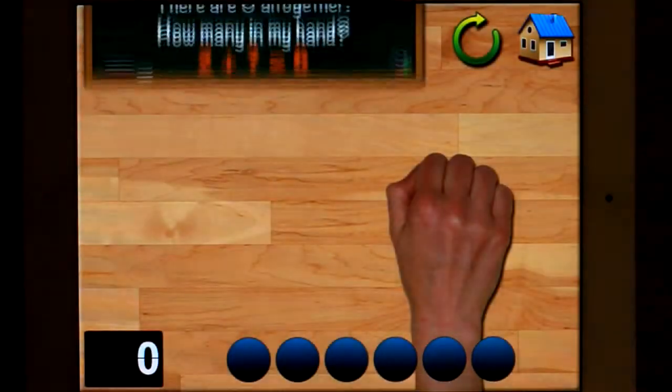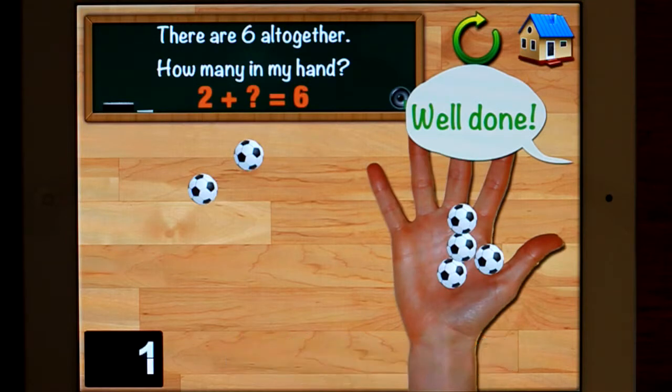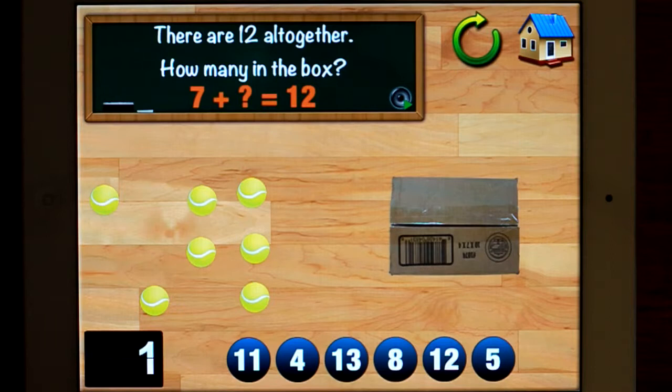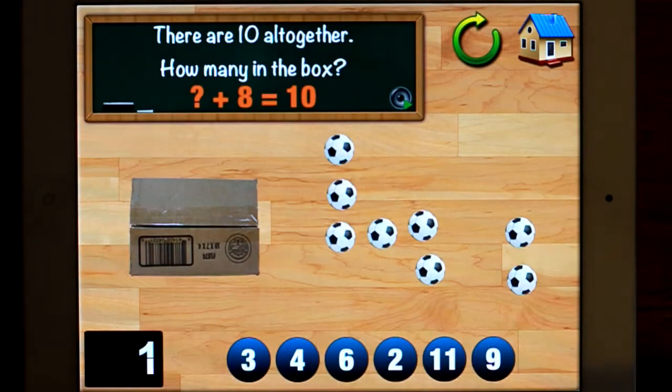All right, so addition, same thing, but with addition. There are six altogether. How many in my hand? Well, we know there's four. Well done. There are twelve altogether. How many in the box? All right, so I can sneak a peek and I can still get it wrong. Four. Eight. Twelve. Thirteen. Eleven. Five. All right, so it went green, moves on to the next equation.